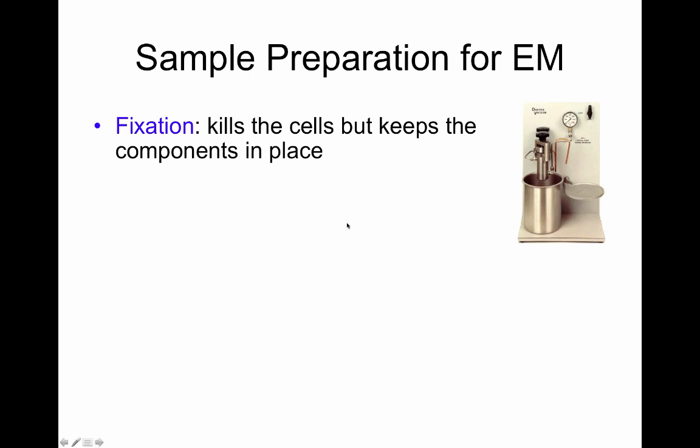However, in order to perform electron microscopy, you require extensive manipulation of the sample. The first part of that manipulation requires fixation. Fixation is going to kill the sample, but it's going to allow the components within the cell to remain complete and in place. That will then ensure the appropriate imaging with the electron microscope.